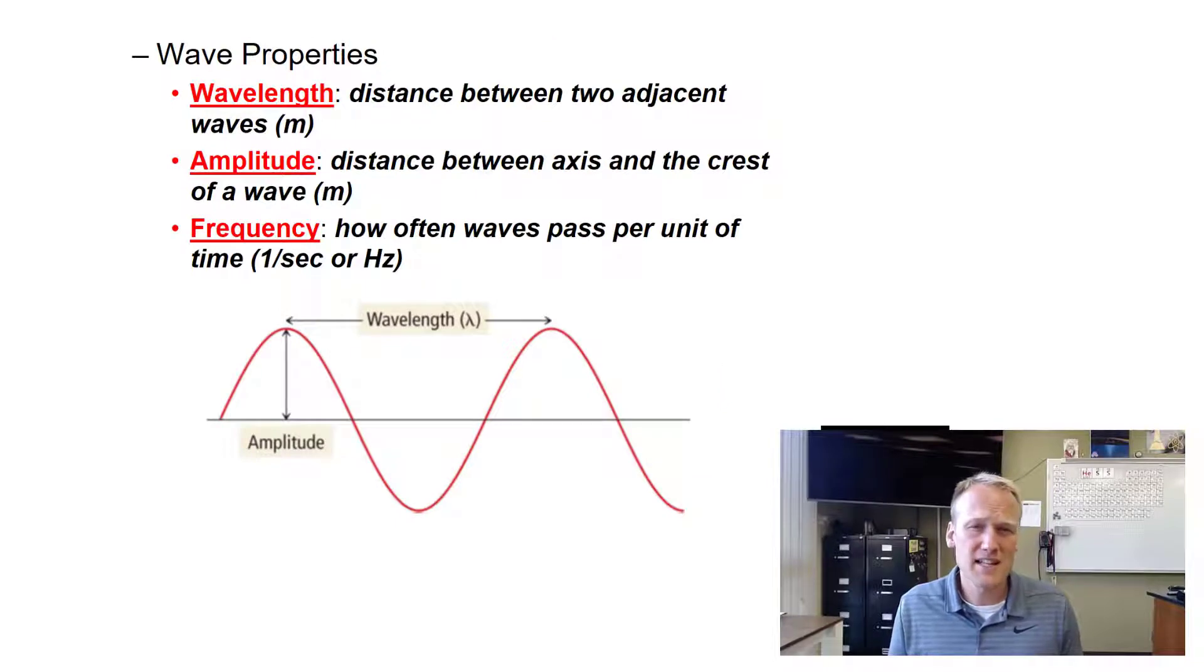You may remember from physical science class: we have wavelength, amplitude, and frequency. These are some of the measurements we can take about a wave. Typically, wavelength and frequency are inversely proportional. So as the frequency increases, the wavelength gets smaller. Frequency increases, wavelength decreases, and vice versa.